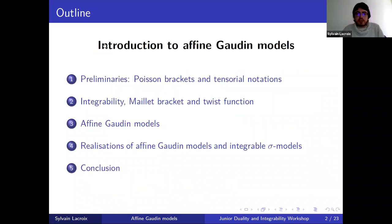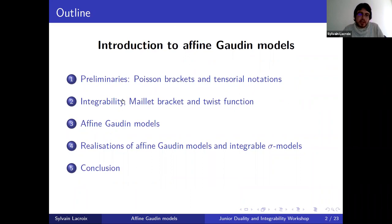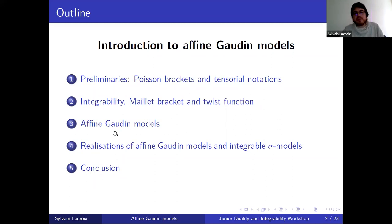The idea of this talk is to give some introduction about affine Gaudin models. The plan will be: first, some preliminaries about Poisson brackets and tensor notation to fix the formalism, which will allow me to discuss Hamiltonian integrability and the notion of Maillet bracket and twist functions. Then I will go to the description of these affine Gaudin models. Finally, I will discuss the notion of realization of an affine Gaudin model, which will allow us to make the link with integrable sigma models, illustrated on a specific simple example.